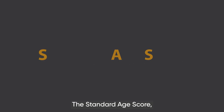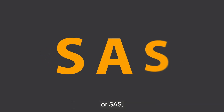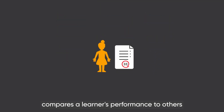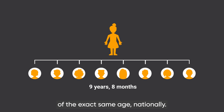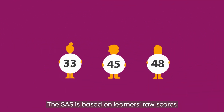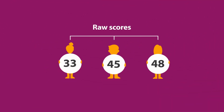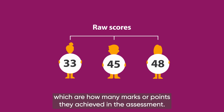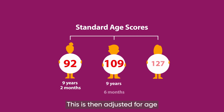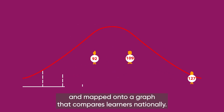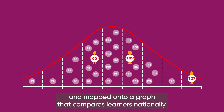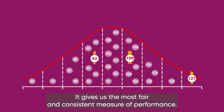The Standard Age Score, or SAS, compares a learner's performance to others of the exact same age nationally. The SAS is based on learners' raw scores, which are how many marks or points they achieved in the assessment. This is then adjusted for age, in years and months, and mapped onto a graph that compares learners nationally. It gives us the most fair and consistent measure of performance.